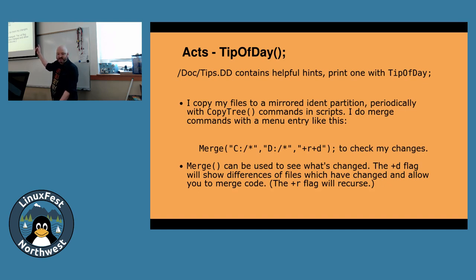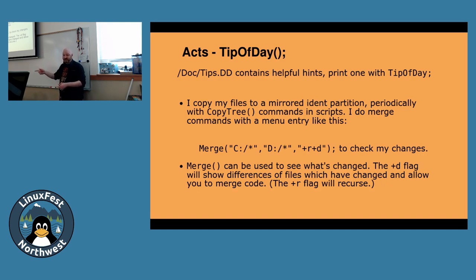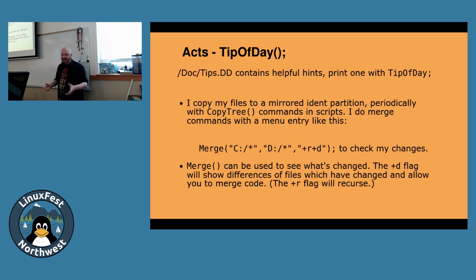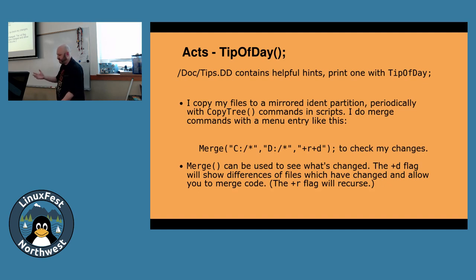There is a bunch of documentation, including a file called Tips that gives you little things to help make Temple OS usable. One of the tips says: I copy my files to a mirrored identical partition periodically with CopyTree, and I merge commands with merge C:/ — note that's a Linux-style forward slash, not a DOS backslash. Plus-r recurses and plus-d shows differences of files, so merge C:/* D:/* +r +d does exactly what it says on the tin. Tip of day is full of these things — I still keep finding new ones.